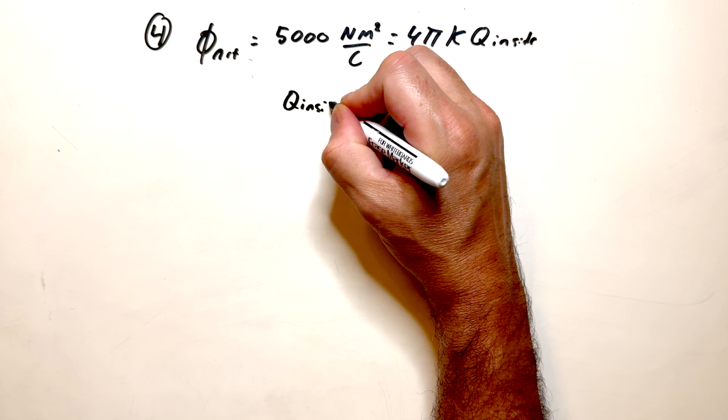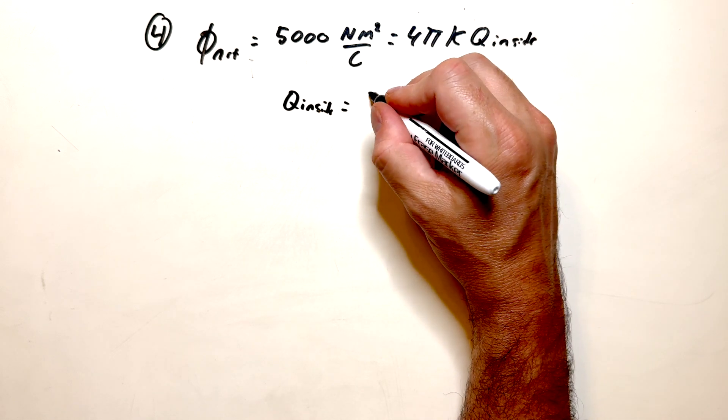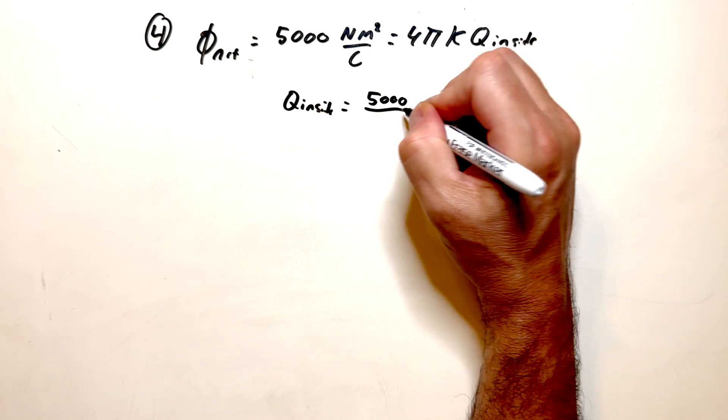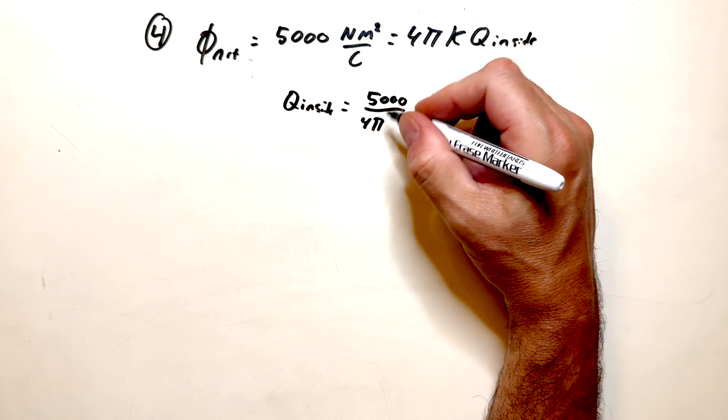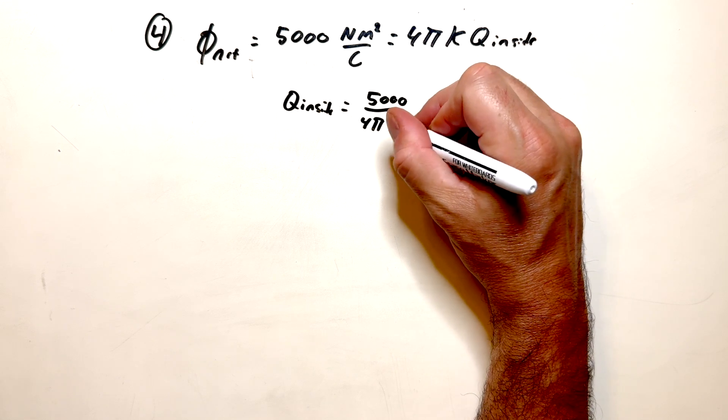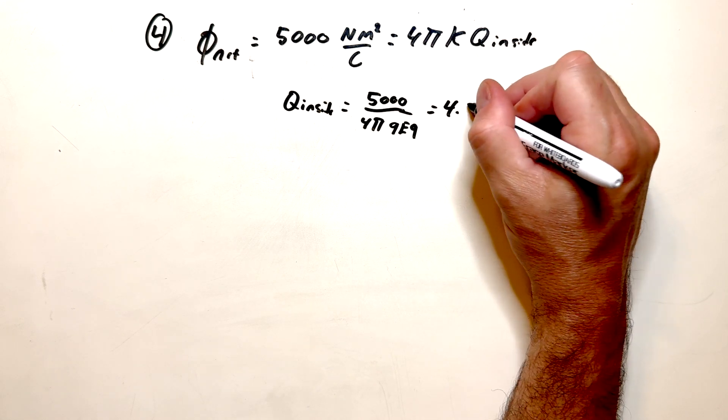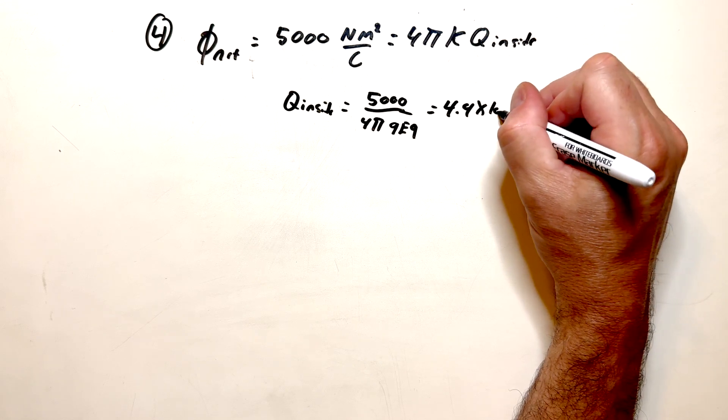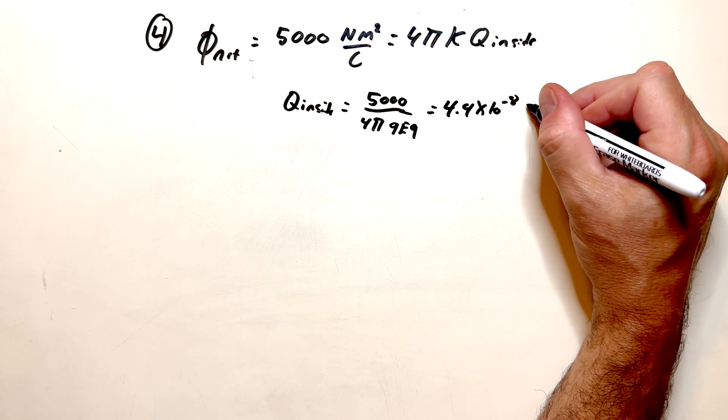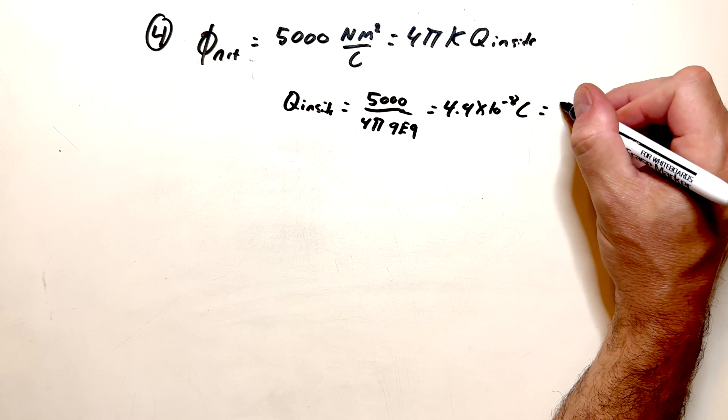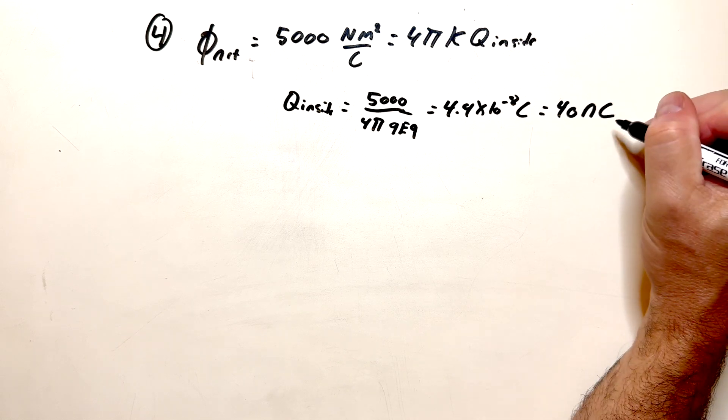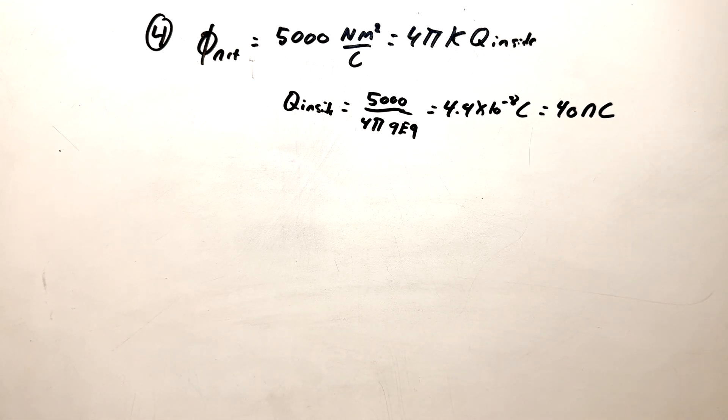So q inside is equal to 5,000 divided by the four, the pi, k is 9E9. And that's going to give me 4.4 times 10 to the minus 8 coulombs, which is the same thing as 40 nano coulombs. Okay. Pretty straightforward.